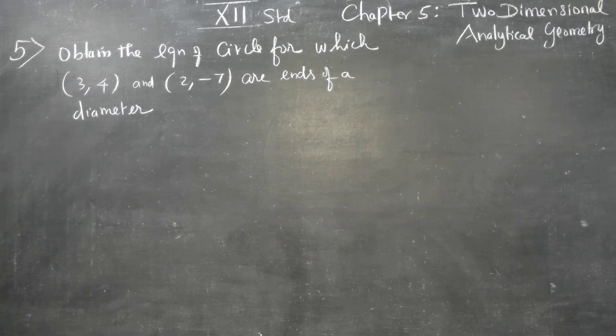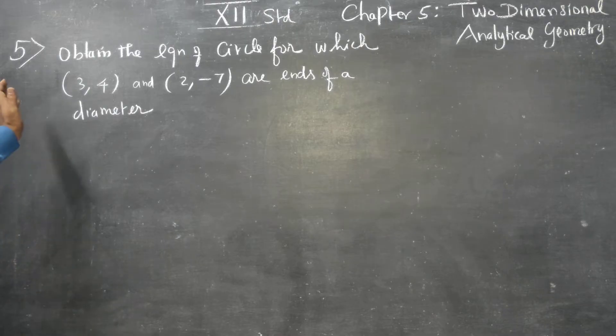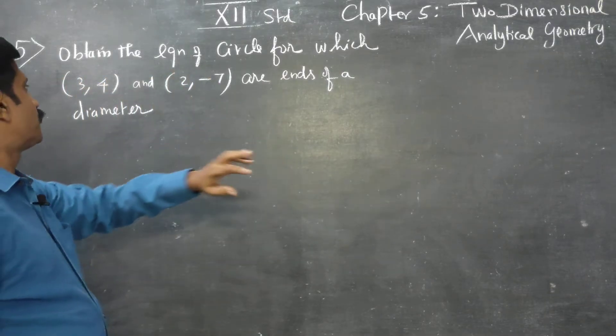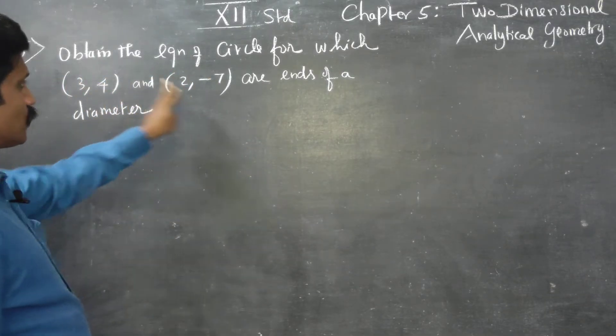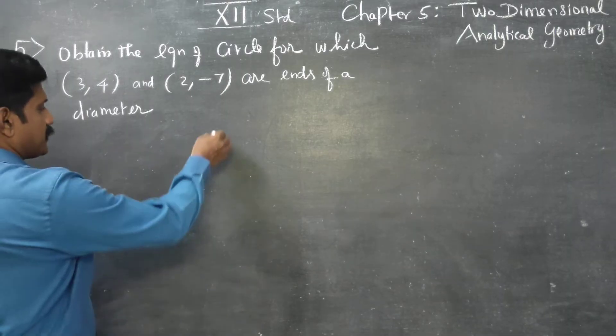Dear 12th standard students, in Chapter 5 — 2D Analytical Geometry — we will solve problem number 5: obtain the equation of the circle for which 2 points are the ends of a diameter.